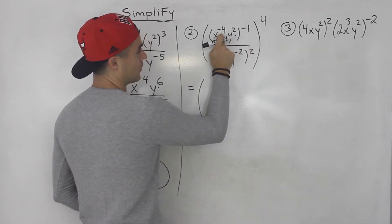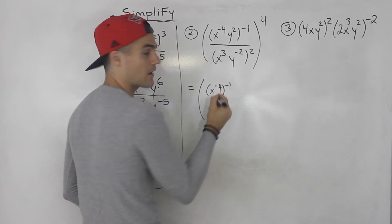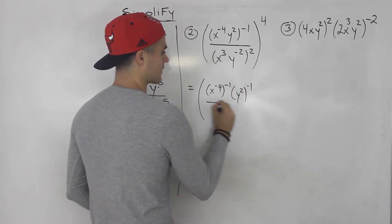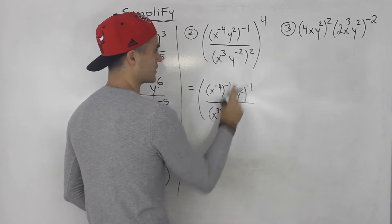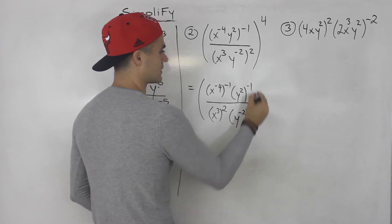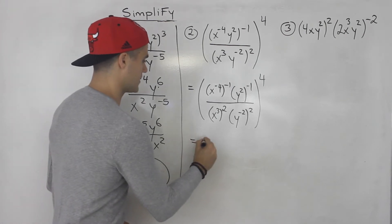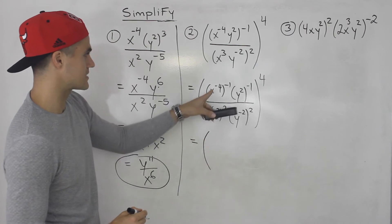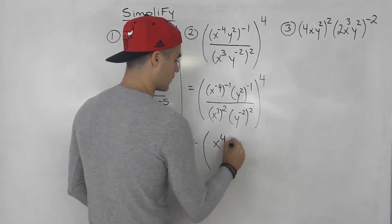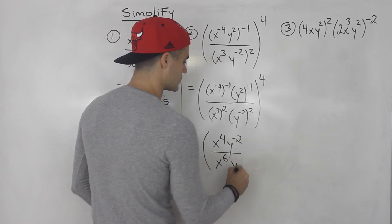So I'm going to distribute this negative one into the bracket. Everything inside gets taken to the power of negative one: x to the negative four gets taken to the negative one, and y squared gets taken to the negative one. Over here, I'm distributing the two: x cubed gets squared, and y to the negative two gets squared as well. And then we still have the outer power of four.